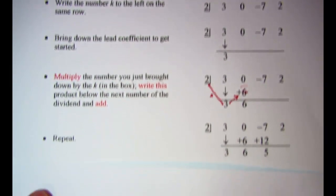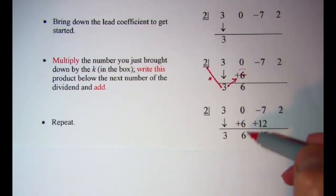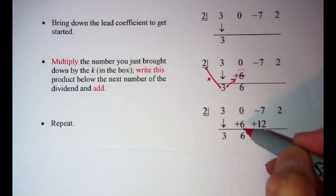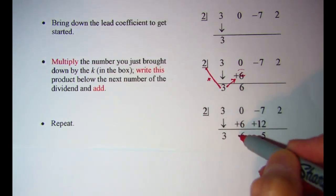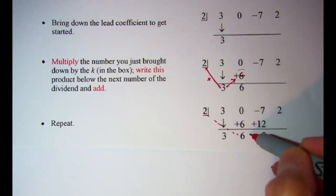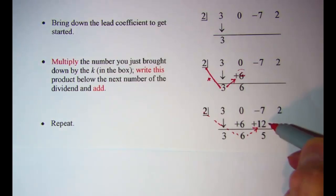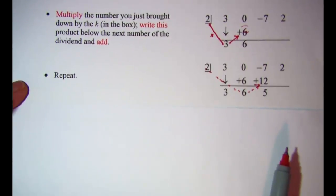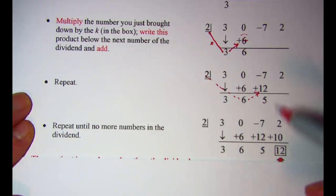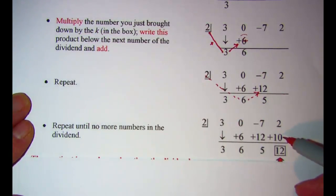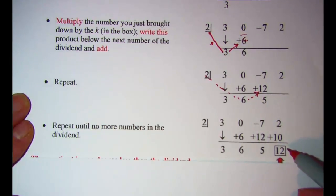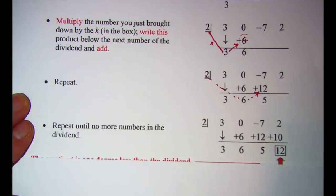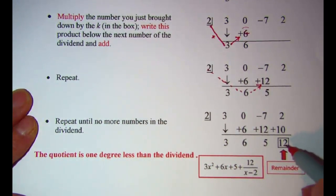Then we repeat that process. The 6 we got when we added, we multiply by the 2 out here, and write that answer in the next spot. Adding: negative 7 plus 12 gives me 5. Now take that 5 and multiply by 2, giving 10; write it in the next spot, and adding those two numbers gives me 12. The 12, which is the last number in the problem, is our remainder — usually boxed in.